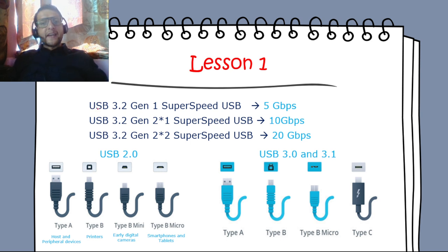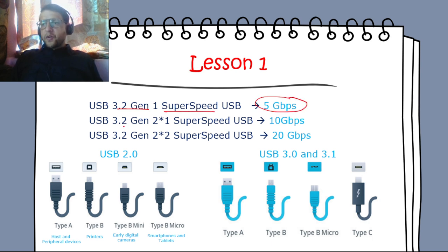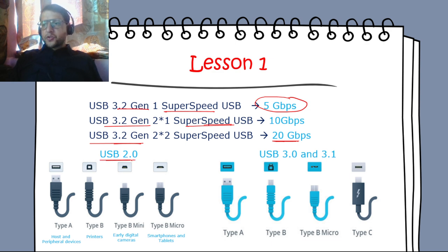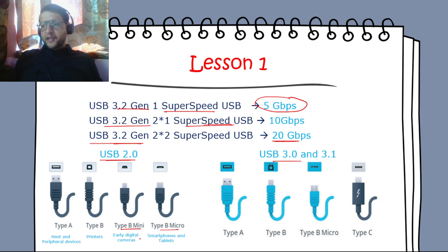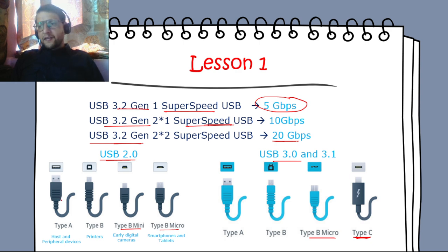In Lesson 1 — installing motherboards and connectors — you need to understand USB versions. USB 3.2 Gen 1 is also called SuperSpeed at 5 Gbps. USB 3.2 2x1 SuperSpeed is 10 Gbps, and USB 3.2 2x2 is 20 Gbps. Connector types include Type-A for host and peripheral devices, Type-B for printers, Type-B Mini for early digital cameras, Type-B Micro for smartphones and tablets, and Type-C.